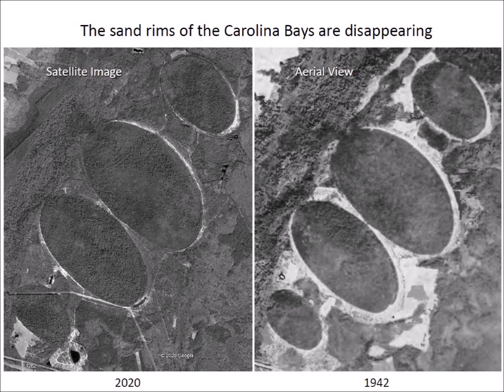Comparison of these two images shows that the sand rims of the Carolina Bays are disappearing. The image on the right from Johnson's 1942 book has broad, well-defined sandy rims, but a contemporary satellite image on the left shows that the sandy rims have been reduced to thin outlines during the past 78 years. It would not be surprising if these bays were completely obliterated in a few centuries.